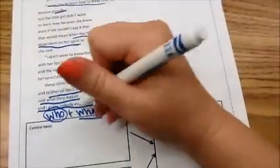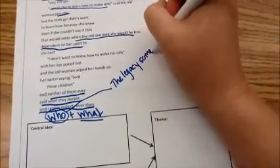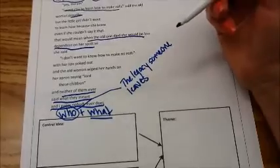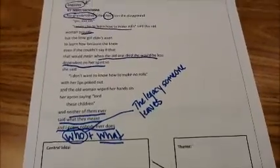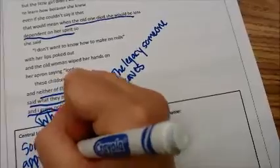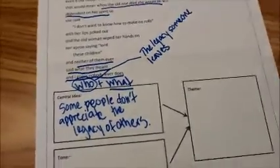Let's start by finding the central idea — the who and the what. I'm going to circle clues about who this poem is about and underline clues about what they're doing. The poem is called 'Legacies,' and a legacy is something you pass on from one generation to another. I think it's about legacies because it says 'I want you to learn to make rolls,' she said proudly. The little girl didn't want to because when the old one died, she would be less dependent on her spirit — she wouldn't need her grandmother anymore. So I think the central idea is that some people don't appreciate the legacy someone leaves.